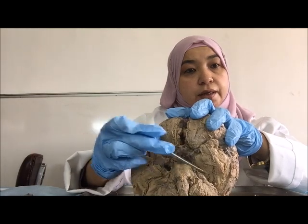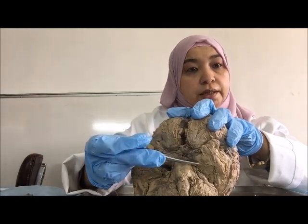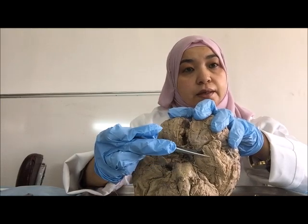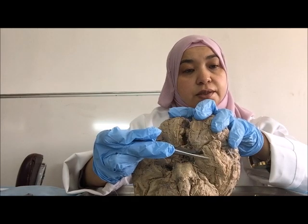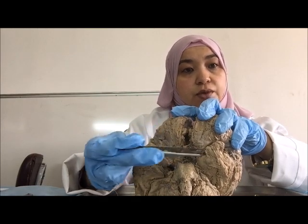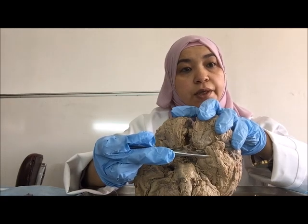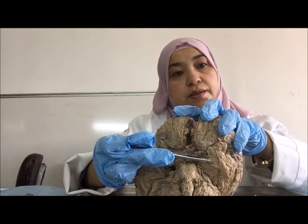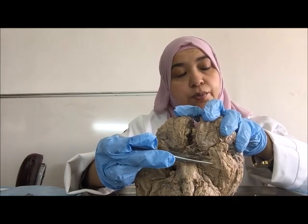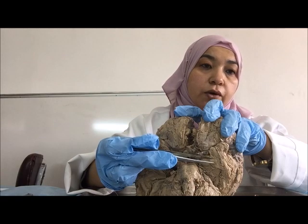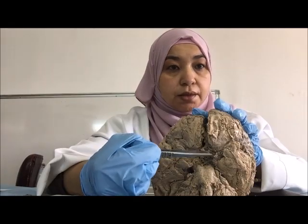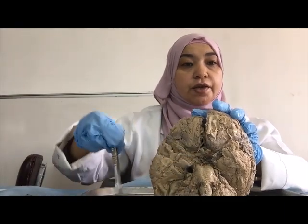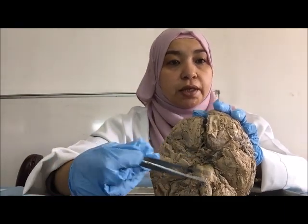The most anterior part of the parahippocampal gyrus has a rounded area called the uncus. The uncus is important because it contains a nucleus from the basal nuclei of the brain called the amygdala or amygdaloid nucleus. This nucleus contains the centers for smell and plays an important role in the function of the limbic system.